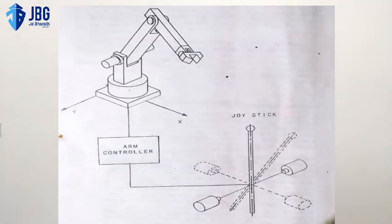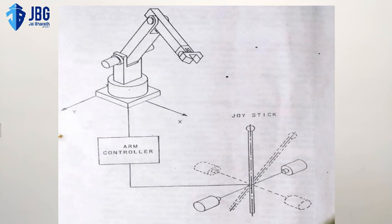There is a misconception with this teach box: an operator must look away from the robot motion to locate the proper push button to move the robot. This can be eliminated by the use of joysticks. You can see the figure of an industrial system which uses a joystick to move the robot.